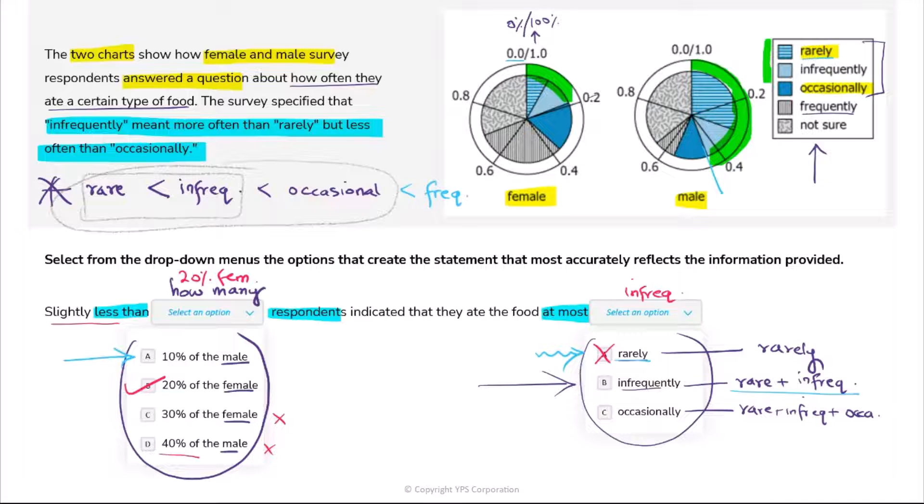Now if you read the whole thing at once: slightly less than 20% female respondents indicated that they ate the food at most infrequently. And this is the final section - this is that slightly less than 20 percent that used rarely or infrequently, that ate that food in this duration. So very interesting question, seeing two blanks together.